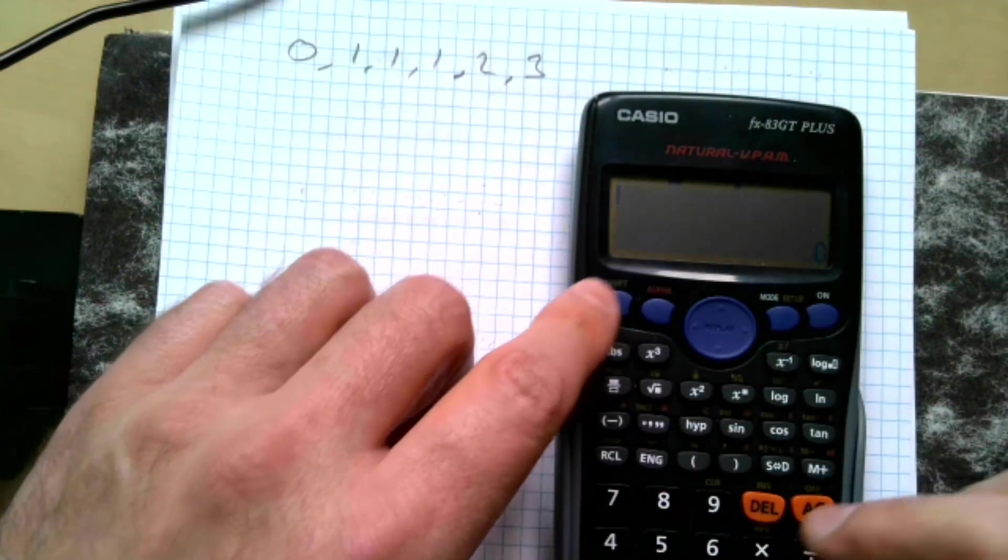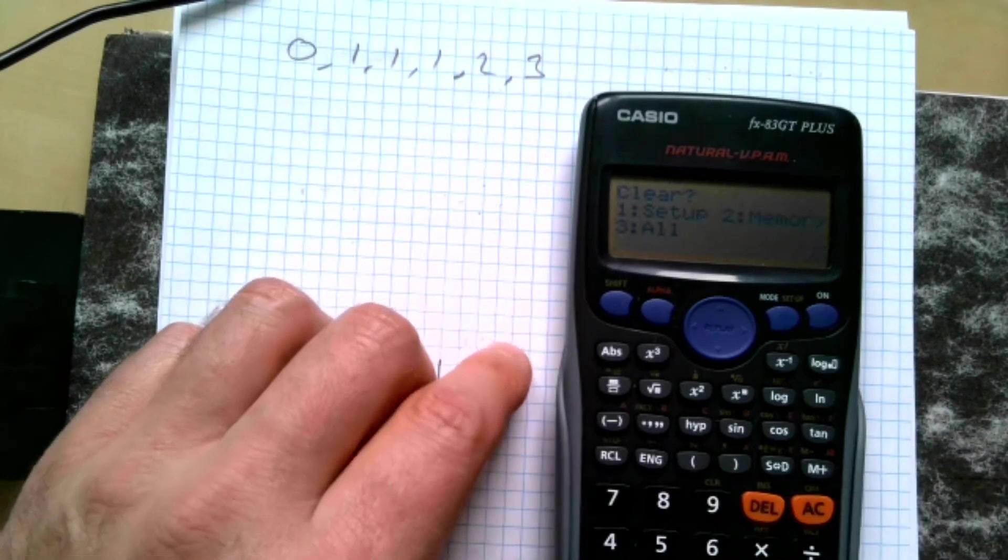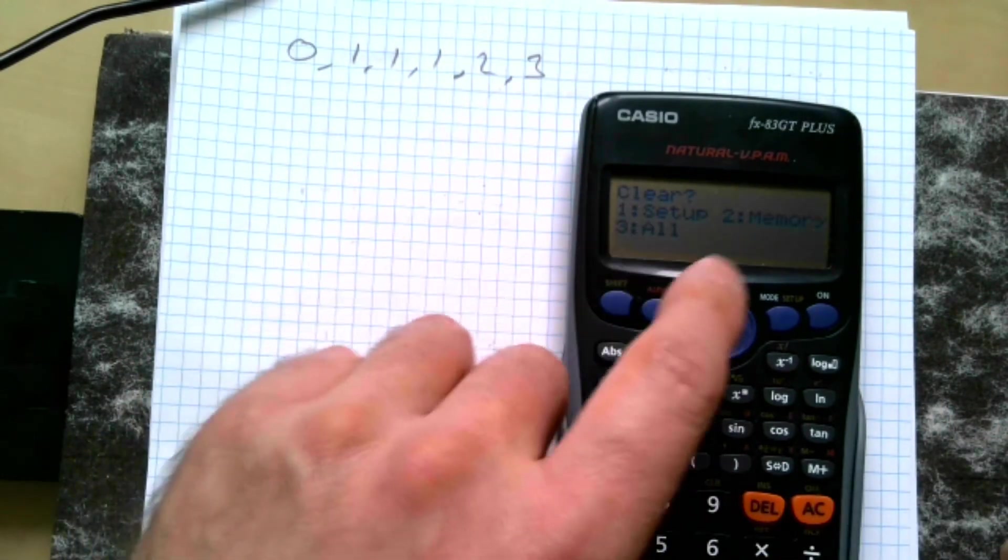In order to get rid of all the data if you want to, you can go shift nine, clear memory, and equals is yes, complete yes, and that's it all done.